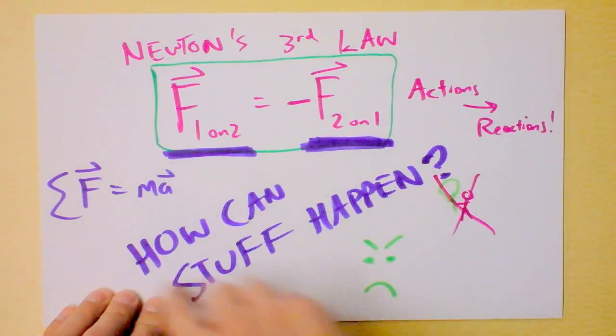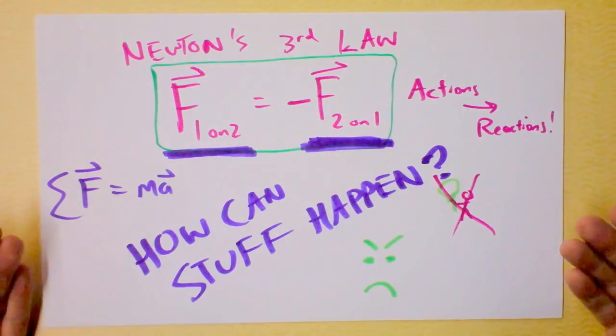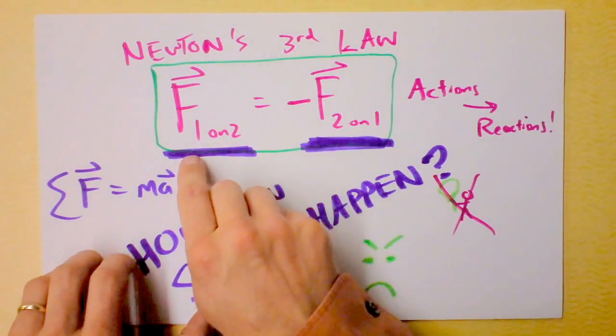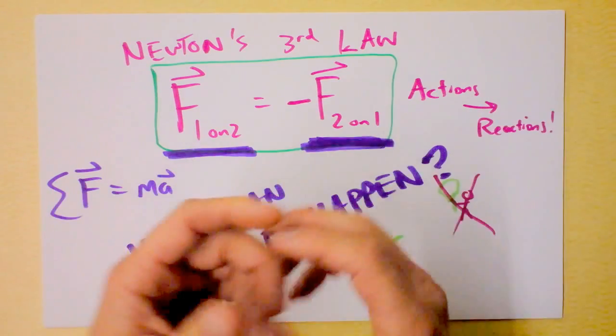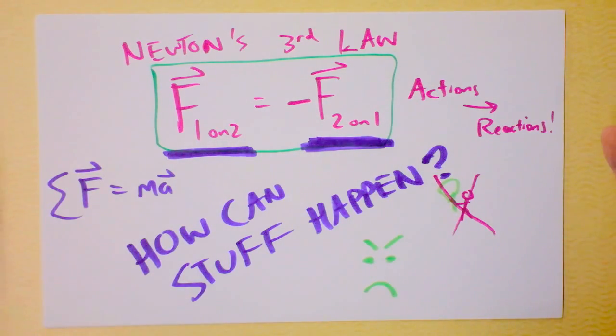The answer is on this sheet of paper. However, how the heck can stuff accelerate if every force is paired with an equal and opposite force all the time and has since the creation of the universe? The universe says that one force is equal to another force and they're opposite directions always. Wow. Figure that out. Post in the comments.